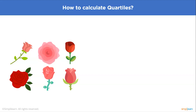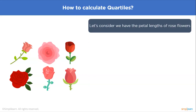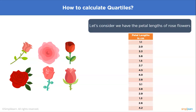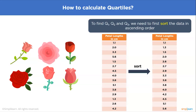Now let's understand how we calculate quartiles with a famous example. Consider the petal length of rose flowers, given in centimeters. To find Q1, Q2, and Q3, we first need to sort the data in ascending order. Once sorted, we get the values: 1.1, 1.3, 1.5, all the way up to 5.6.